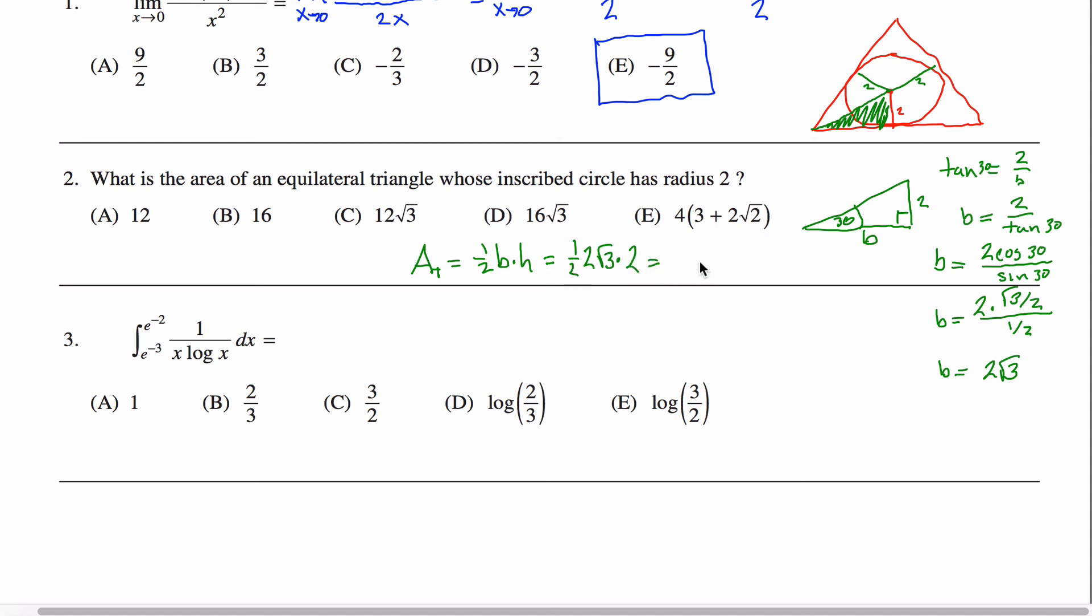So this one half and this two cancel out. And so I figure out that the area of the triangle is two root three. But that's not what I'm trying to figure out. That's the area of this little triangle. I want to know the area of the equilateral triangle. And there's six of these guys in this equilateral triangle. So I'll take six and multiply it by two root three. That gives me 12 root three, which sure enough is a solution.